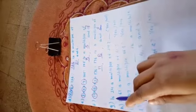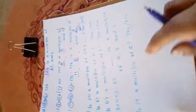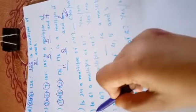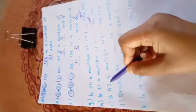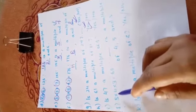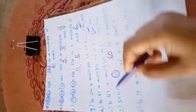G: Is 24 a multiple of 24? Yes — because every number is a multiple of itself. H: Is 61 a multiple of 61? Yes — every number is a multiple of itself. I: Is 47 a multiple of 1? Yes — every number is a multiple of 1. J: 5 × 4 × 3 = 60, so 60 is a multiple of 5, 4 and 3.